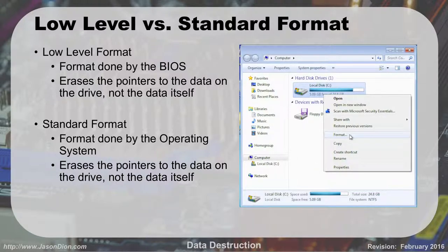We have low-level and standard formats. Low-level is a format done by the BIOS. It erases the pointers on the data on the drive, not the data itself. If you look at a file allocation table, it's a table of contents that points to where on the drive data is located. If you erase that table, it simply erases the pointers — you can still get the data off.